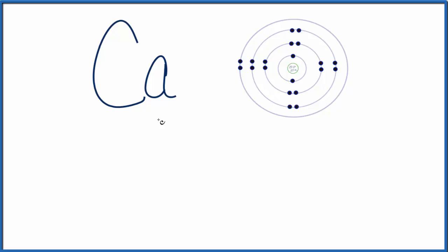Calcium is in group 2, and all those elements in group 2 on the periodic table have two valence electrons. So we can represent that just by putting the two valence electrons, 1, 2, and that's the Lewis structure for calcium.